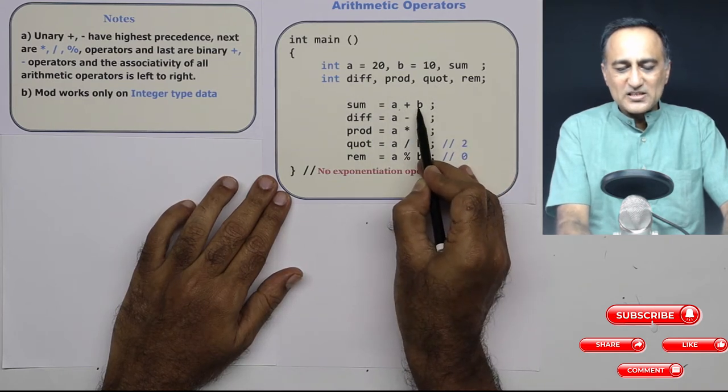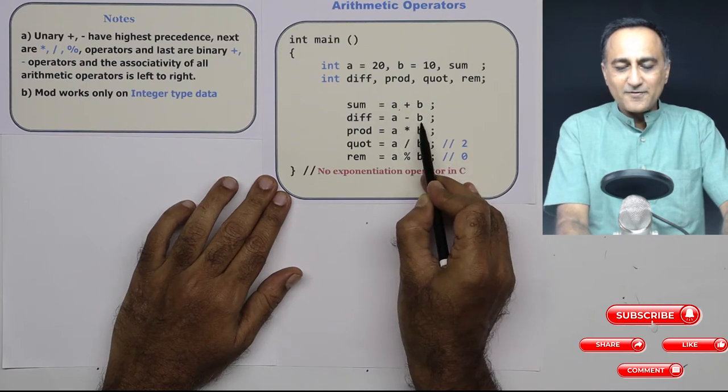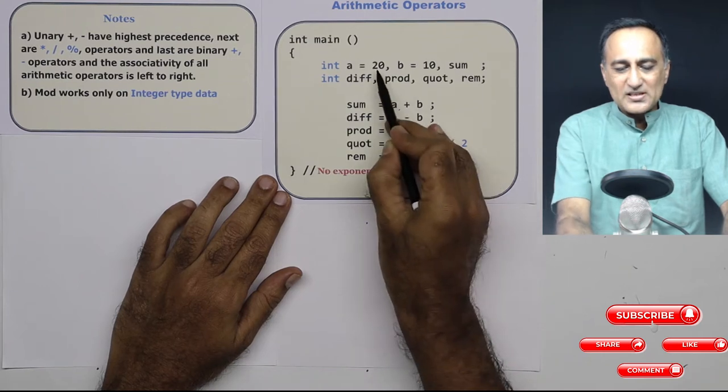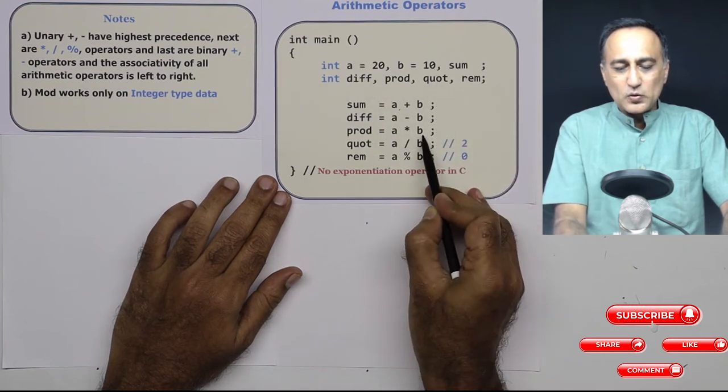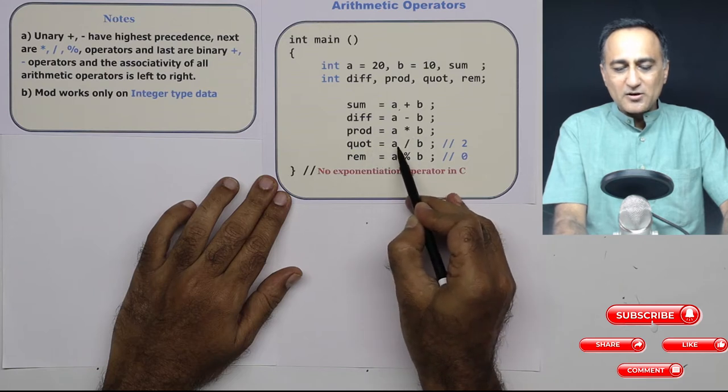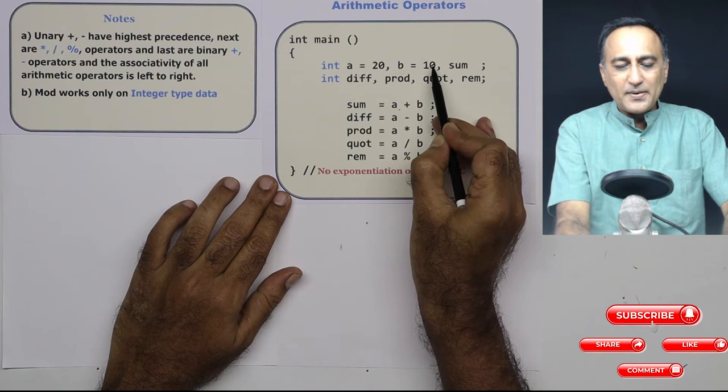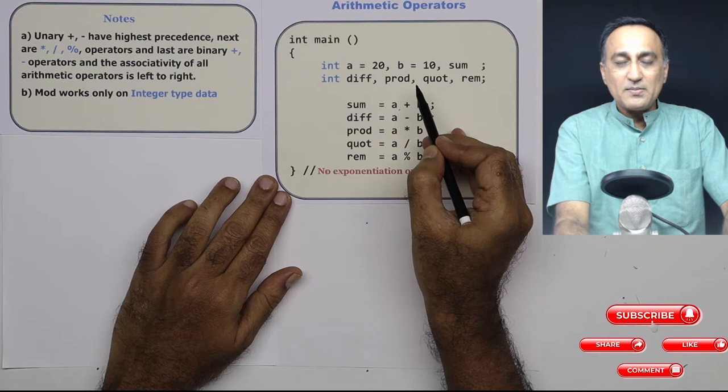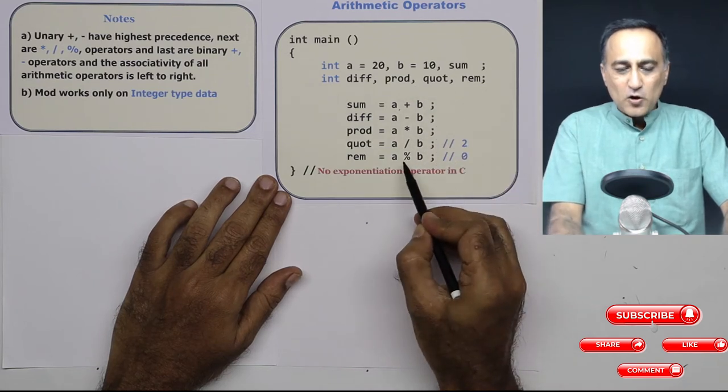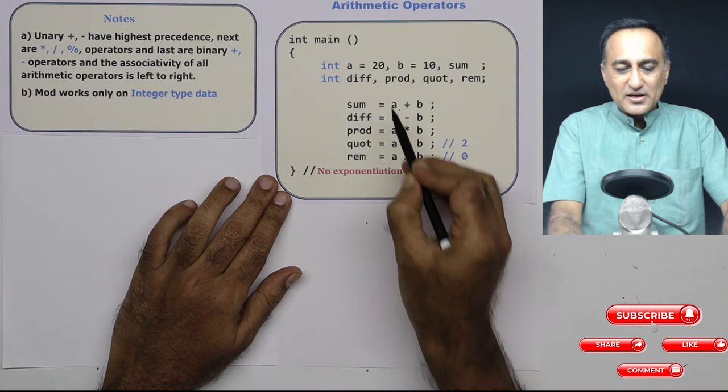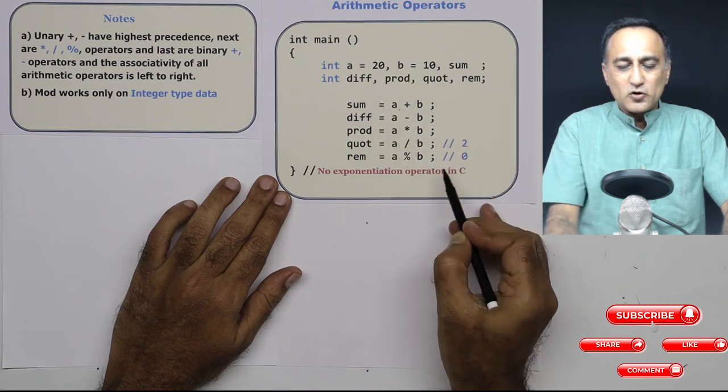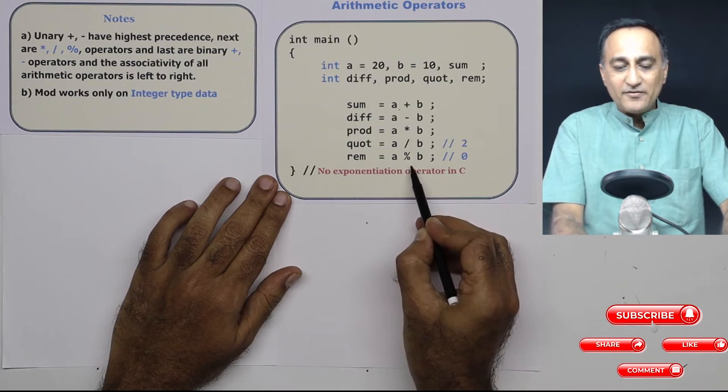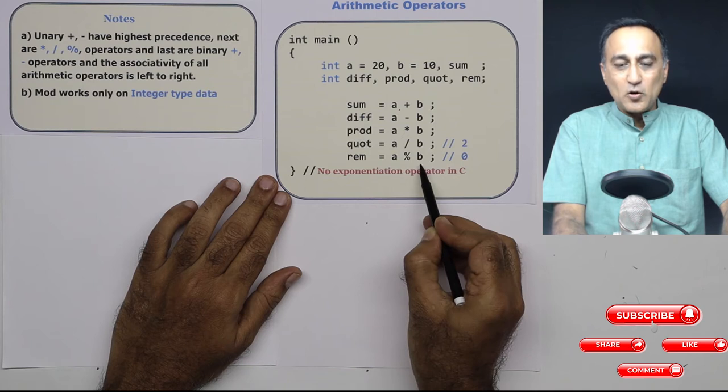This gives me the sum of A plus B, this gives me the difference of A minus B, prod contains the result of A into B. So in this case, 20 into 10 is going to be 200. Quotient is going to give the result of A divided by B. 20 divided by 10 is going to be two because 10 divides 20 two times. Now if I divide 20 by 10, what is going to be the remainder? Remainder is going to be zero. Therefore, this percentage or the mod operator will give you the remainder of a division operation.